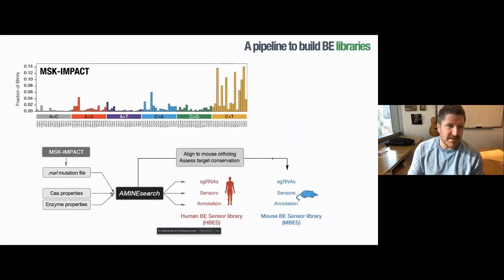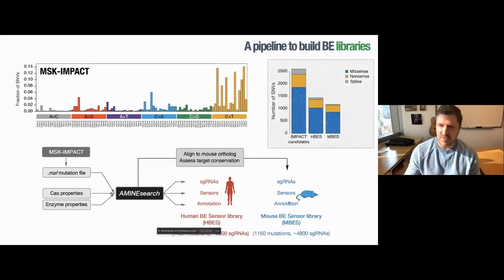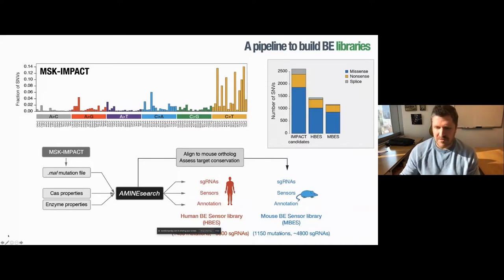We took MSK-IMPACT data of about 20,000 different tumors, pan-cancer, and looked at mutations that occurred across all these cases. This encompasses about 460 cancer-associated genes at the time of the data collection. We used an input file and built a computational pipeline that would allow us to put the mutation file in and specify specific Cas and base editor enzyme properties, and then predict both in the human genome and the mouse genome, which mutations could theoretically be modeled by cytosine base editors. Overall, this allowed us to build design predictions for human and mouse of about half of the mutations that are seen, pan-cancer across this data set, encompassing missense, nonsense, and splice site mutations. In the mouse, the mutation number, as well as the number of guide RNAs that could theoretically make these mutations is smaller, due to changes in codon usage at the specific sites where these mutations occur in humans.